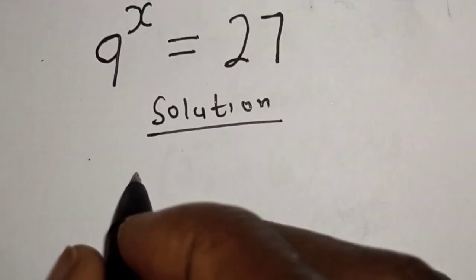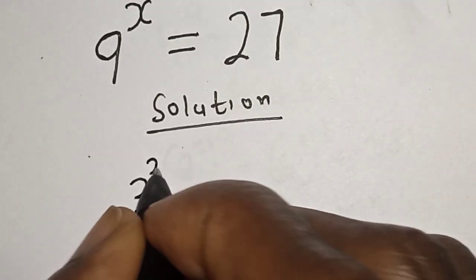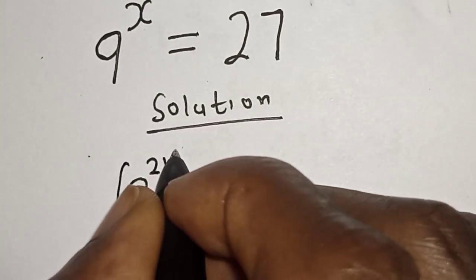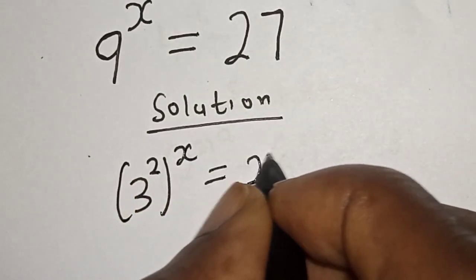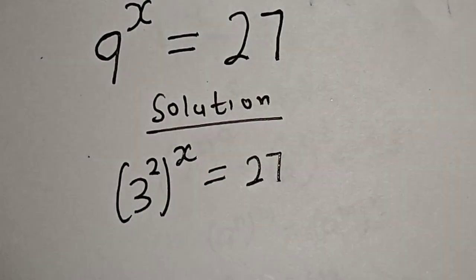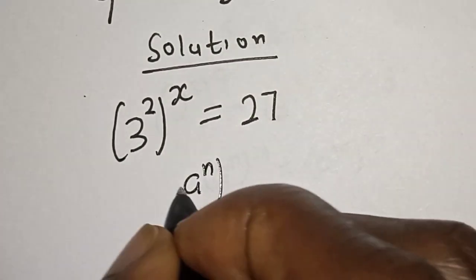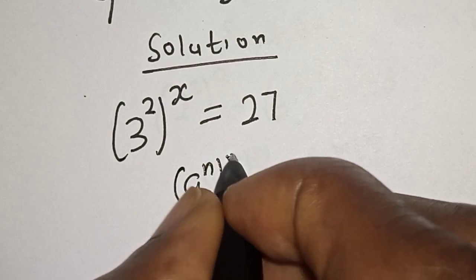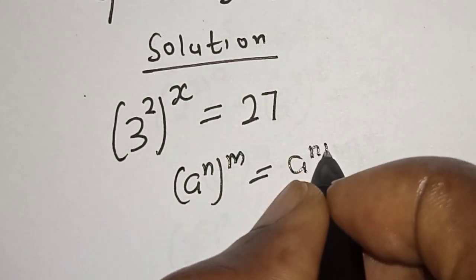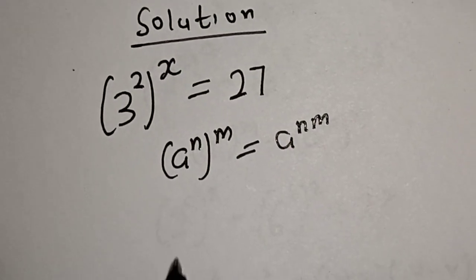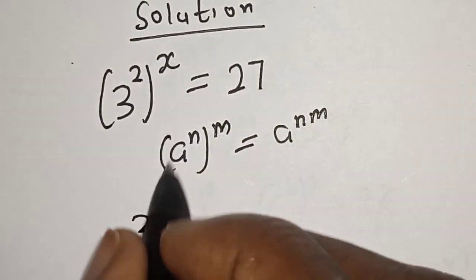9 raised to power s can be written as 3 squared, raised to power s, is equal to 27. Remember the rule that a raised to power n, raised to power m, is equal to a raised to power n times m. So this becomes 3 raised to power 2s.